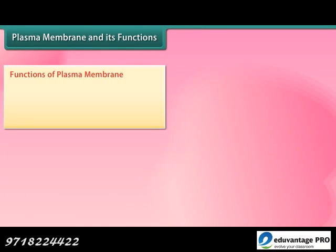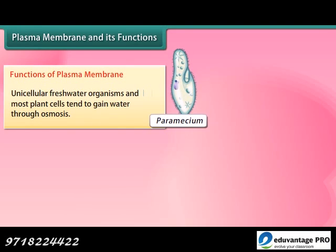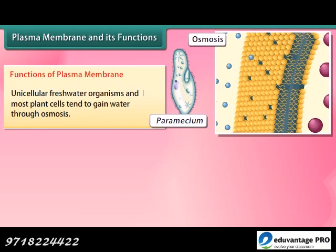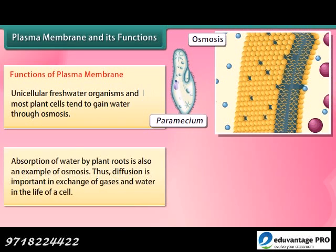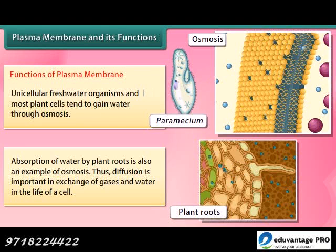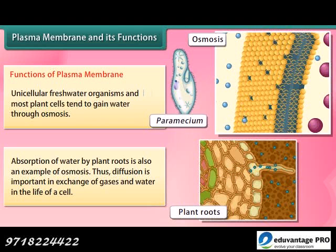Functions of plasma membrane: Unicellular freshwater organisms and most plant cells tend to gain water through osmosis. Absorption of water by plant roots is also an example of osmosis. Diffusion is important in exchange of gases and water in the life of a cell.